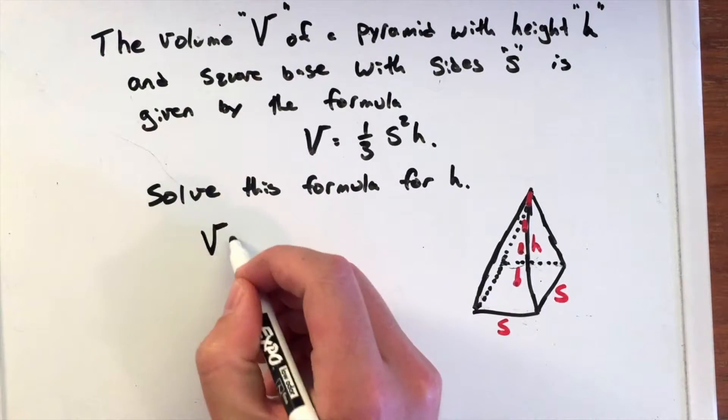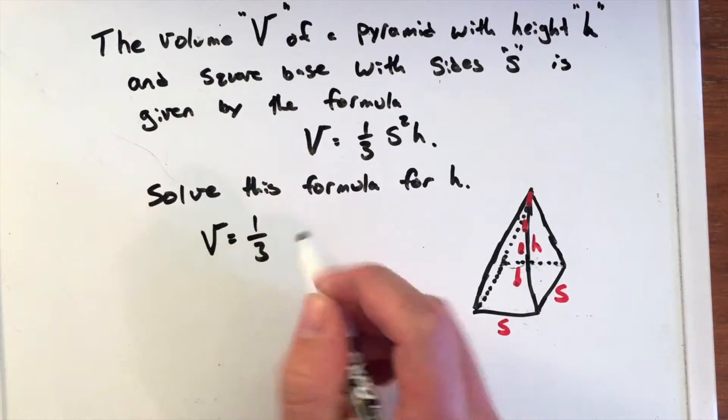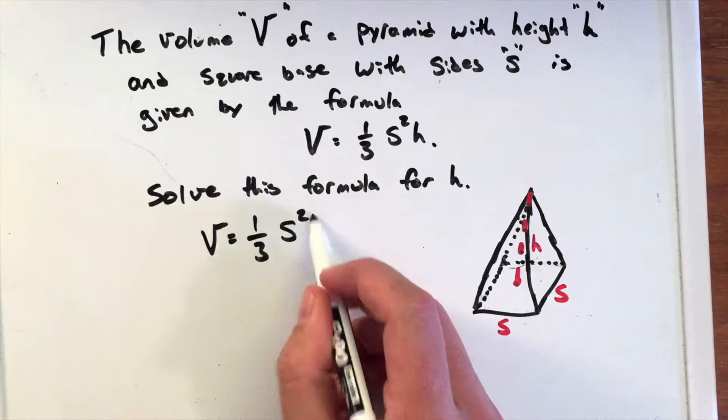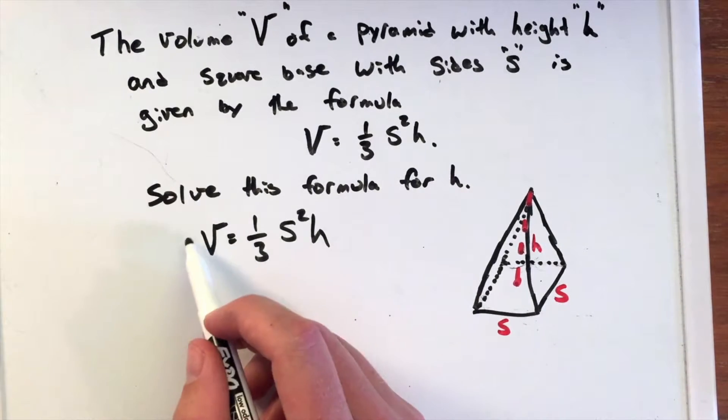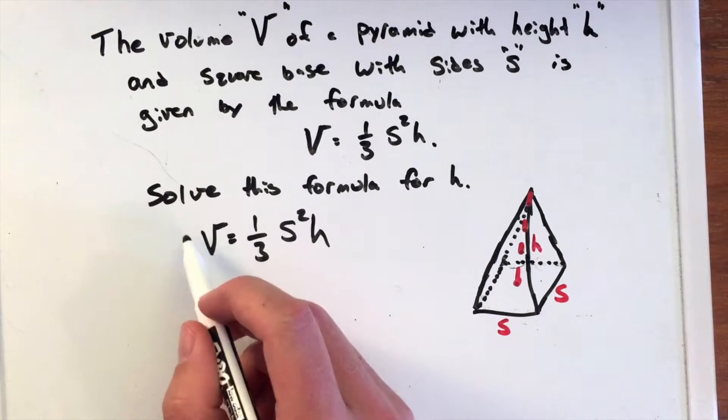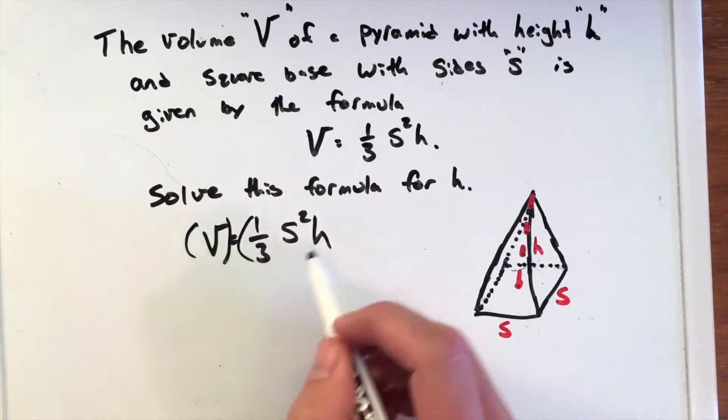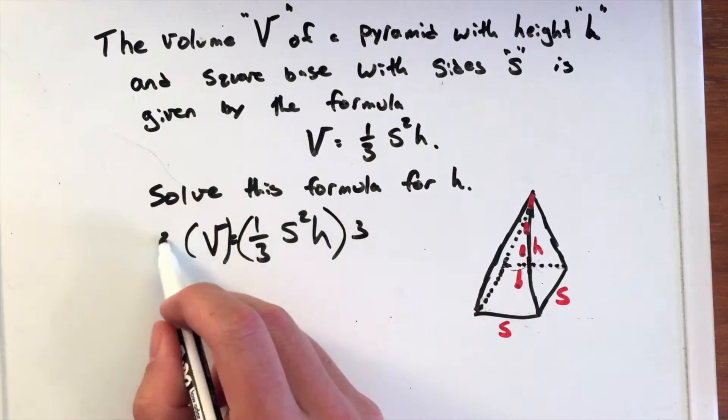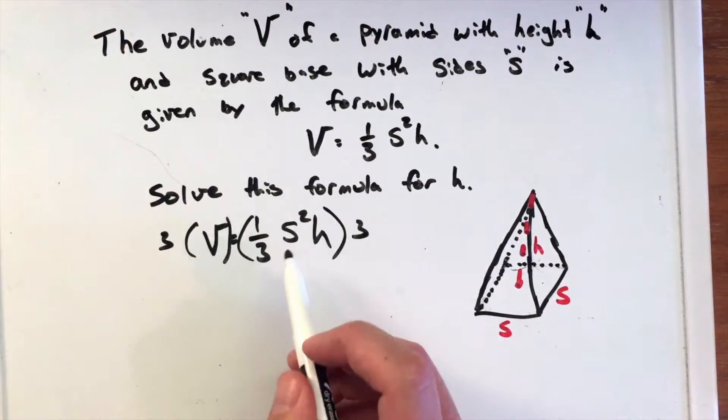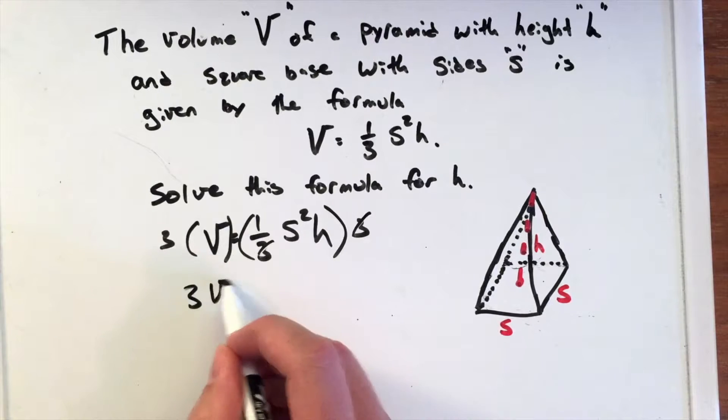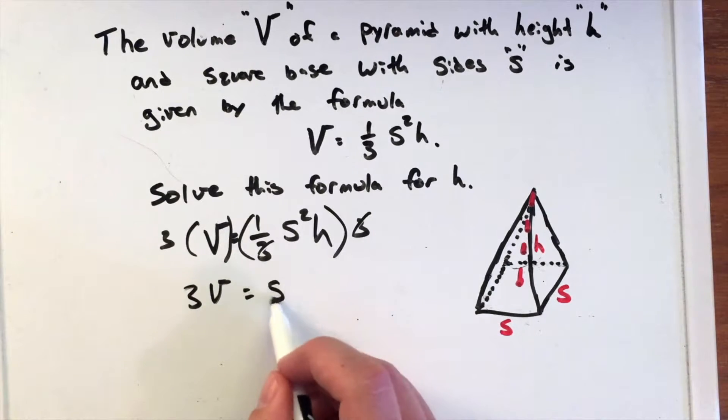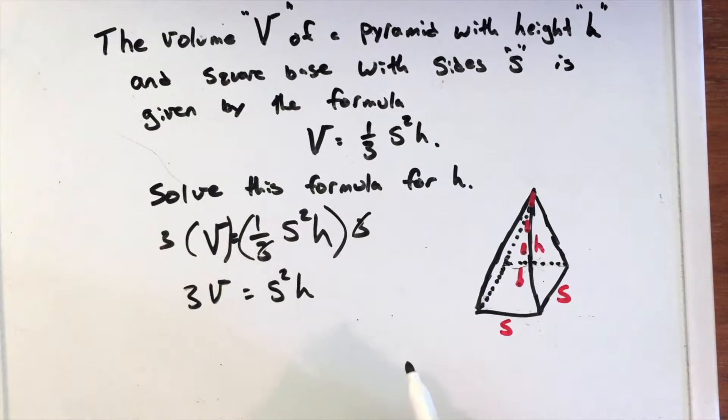So first, let's take this formula V = (1/3)s²h, and we're going to get h by itself. What we can do is multiply both sides by three, and that's going to cancel out the one-third and the three, and we're left with 3V on the left equals s²h.